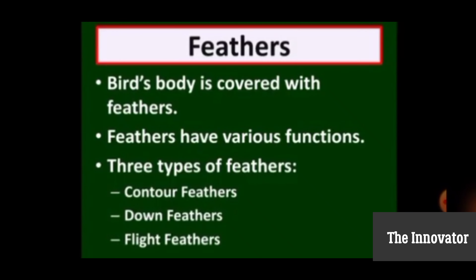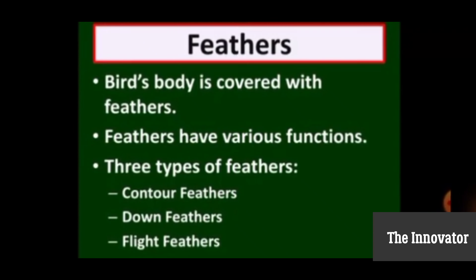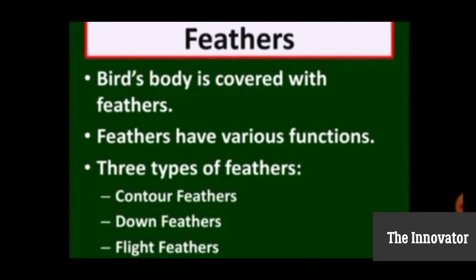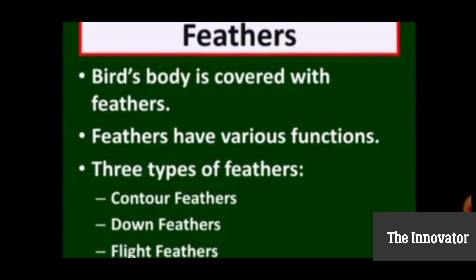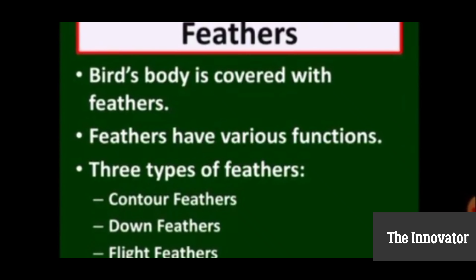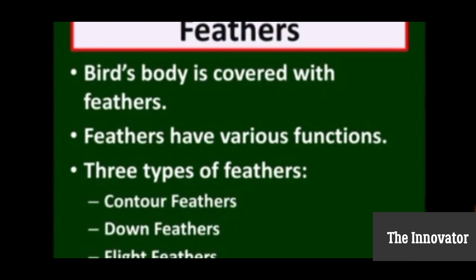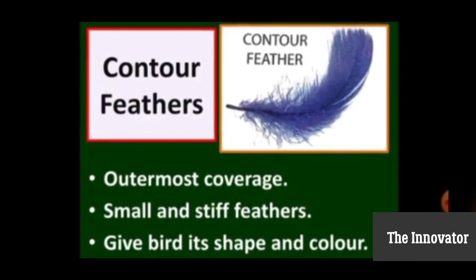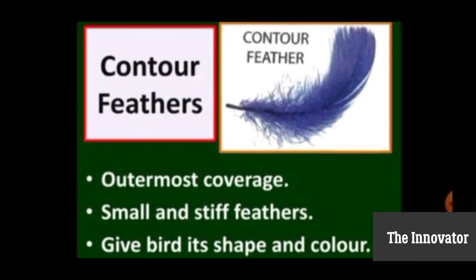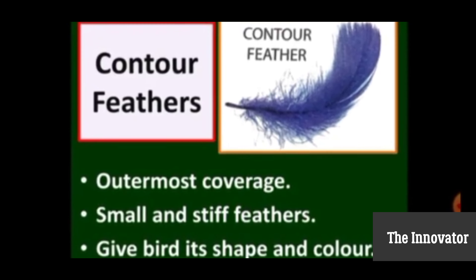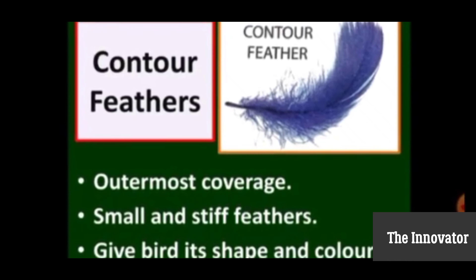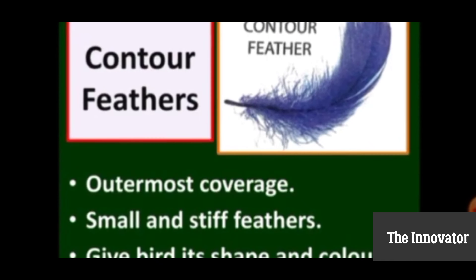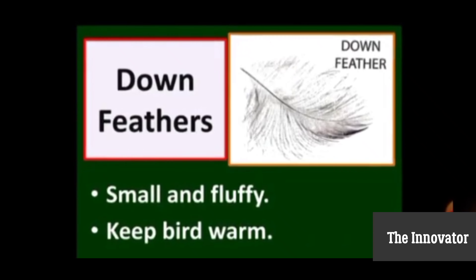Toh chalo, ab baat kerte hai birds ke feathers ki. Bird's body is covered with feathers. They are of three types: contour, down feathers and flight feathers. Toh sab se pahle baari aati hai contour feathers ki. It is the outermost coverage — small and stiff feathers — and it gives shape and color to the bird.